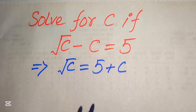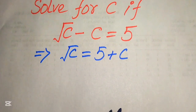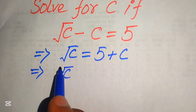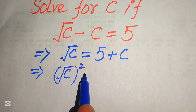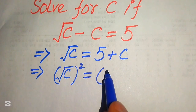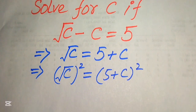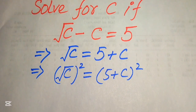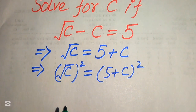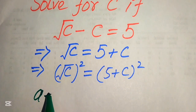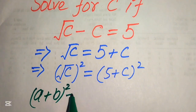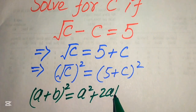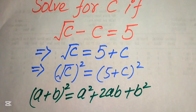In order to remove this radical sign, we need to take the squaring on both of the sides, so we will square both sides: square root of c, whole squared, equals 5 plus c, whole squared. Now in the next step we need to apply the algebraic formula on the right hand side: a plus b whole square equals a square plus 2ab plus b square.